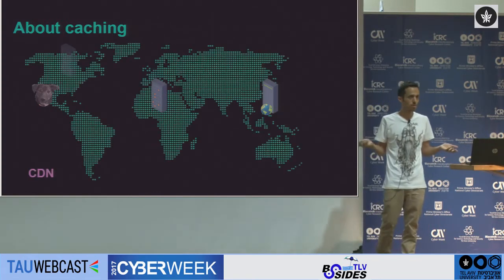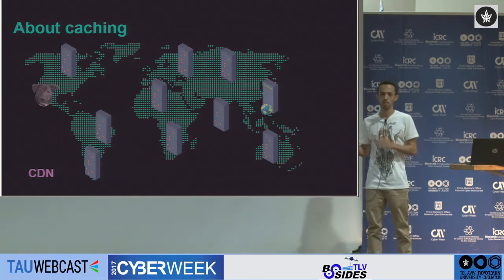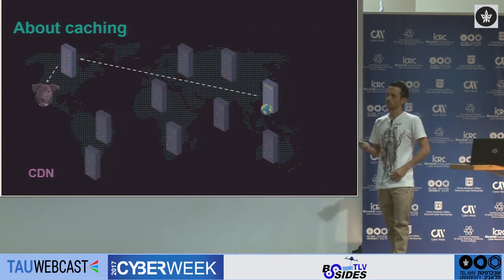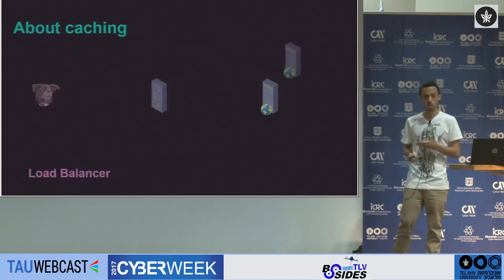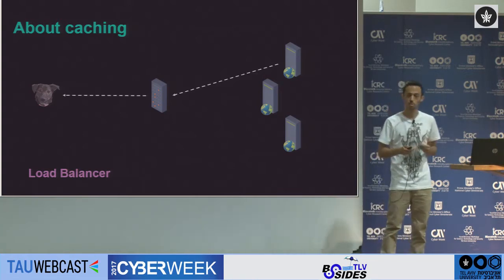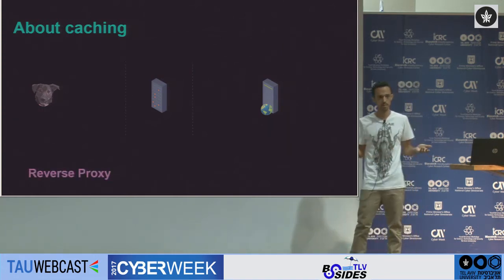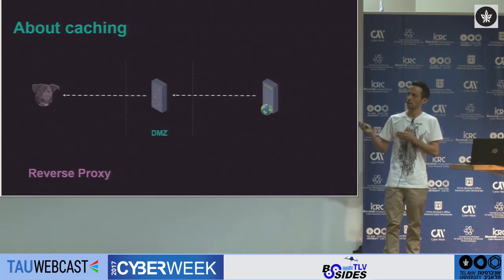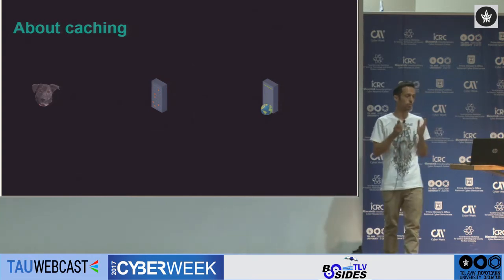The first form of a caching mechanism is CDN — Content Delivery Network. That's a distributed network of proxies all over the world. They cache the application's content, and usually the group of proxies closest physically to the end user will be the one to serve content. Another form is a load balancer — its main purpose is to balance traffic between more than one server, but it can also cache some of the application's content. One last example is simply a reverse proxy, the front end of the application, which can also cache content sent from the web server to the user.